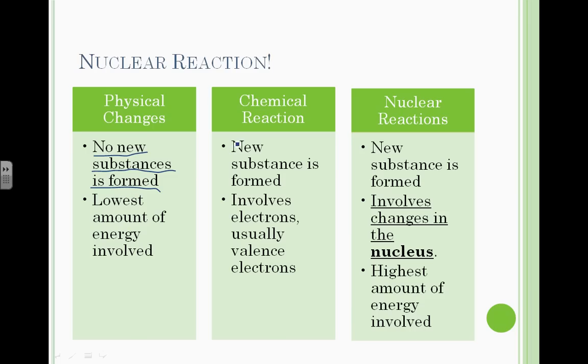You also know about a chemical reaction where there is a new substance formed, and it involves electrons. And most of the time we are talking about valence electrons when we are talking about chemical reactions.